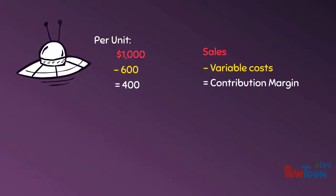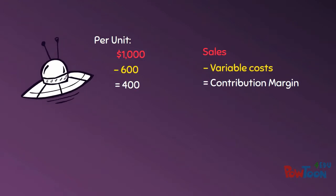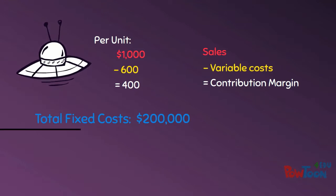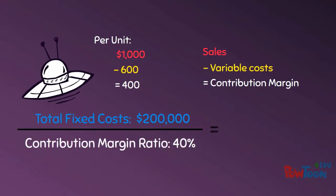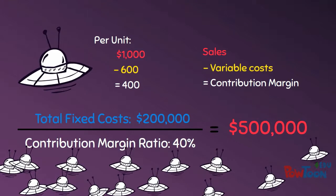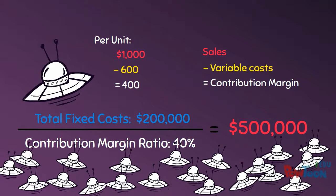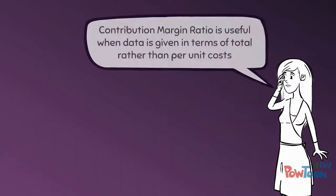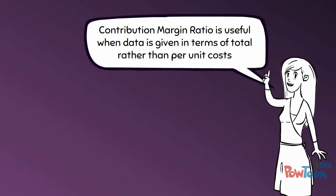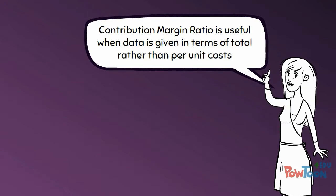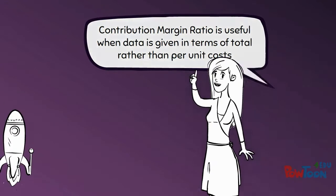We can then take our fixed costs, divide them by our contribution margin ratio, and that will tell us that we need $500,000 in sales to break even. This technique is great for when you are looking at sales for a period of time or in total rather than looking at individual products.